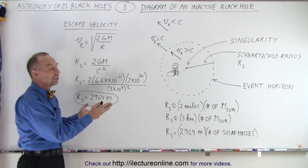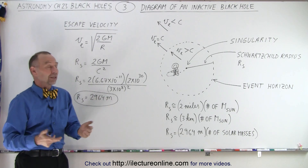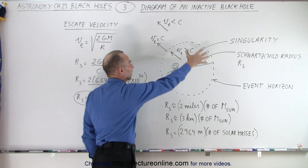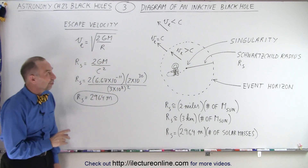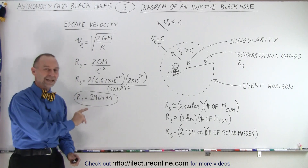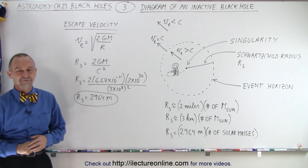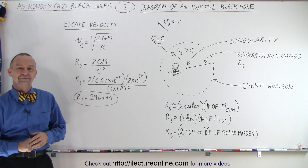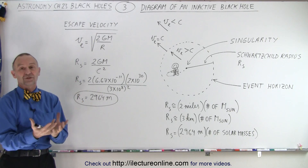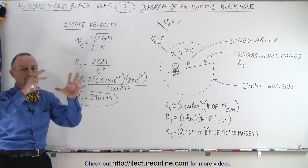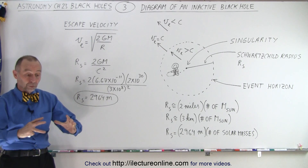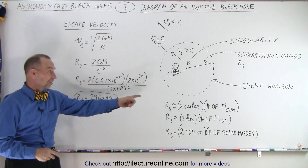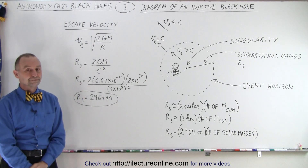So that is how we define a black hole graphically: three things — the singularity, the event horizon, and the Schwarzschild radius. And of course this is only for the case where the black hole is inactive. A student asks: the event horizon is a sphere, not a disk? That's correct — it's an imaginary spherical boundary. And it doesn't vary unless the mass changes, in which case it will grow. If the mass stays the same, it's fixed.